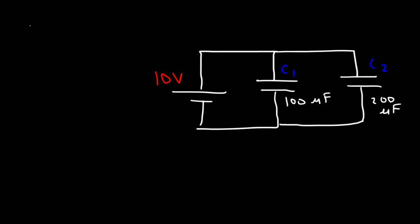For parallel circuits, the equivalent capacitance is simply the sum of all the capacitors connected in parallel. So it's 100 plus 200, which is 300 microfarads. And that's all you need to do to find the equivalent capacitance.